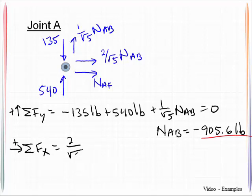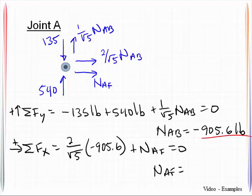135 pounds plus 540 pounds plus 1 over square root of 5 NAB, and all that is equal to 0. NAB will then be computed to be negative 905.6 pounds. The next equilibrium equation, we will sum forces in the x direction. We only have two forces here.